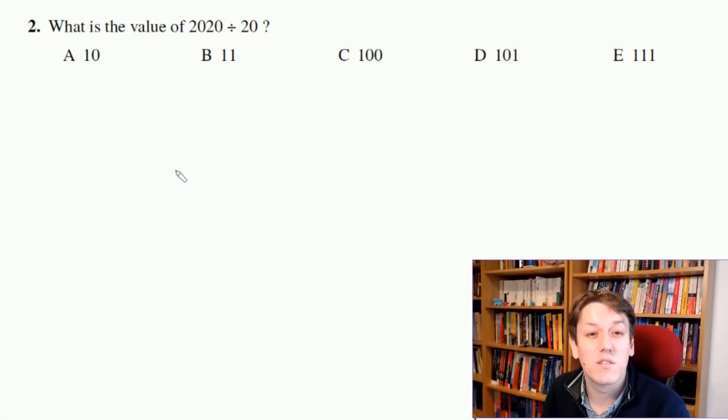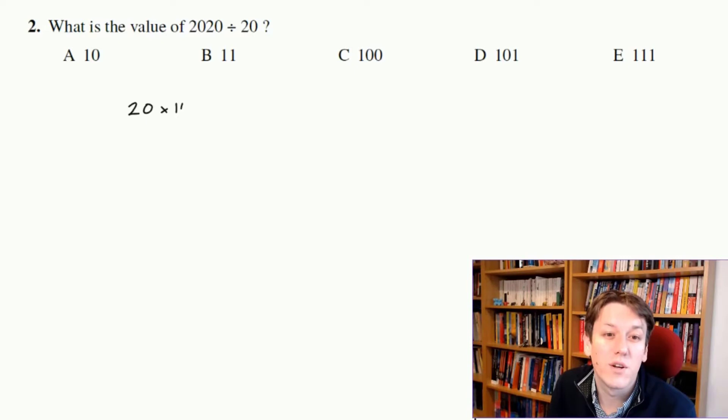So here we've just got to work out 2020 divided by 20. I think I'd think of it like this. I would just think, well, I know that 20 times 100 is 2,000, so 20 times 101 would be 2020.